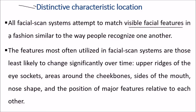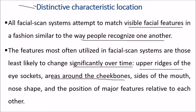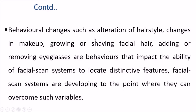All facial scan systems attempt to match visible facial features in a similar fashion to the way people recognize one another. The features most often used are those least likely to change over time: upper ridges of the eye sockets, areas around the cheekbones, sides of the mouth, nose shape, and relative positions of major features. Behavioral changes such as altered hairstyles, makeup, facial hair, or eyeglasses can impact the system's ability to locate distinctive features, but facial scan systems are developing to overcome such variables.